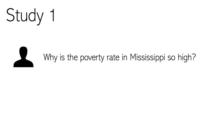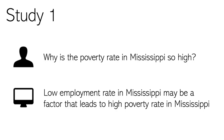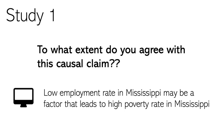In Study 1, we presented participants with a series of why questions and answers to these why questions. For example, the why question might be: why is the poverty rate in Mississippi so high? And the system's answer might be a causal claim like: low employment rate in Mississippi may be a factor that leads to high poverty rate in Mississippi. These causal claims were gathered from the pre-study. For each question, we asked participants to what extent they agree with the causal claim.